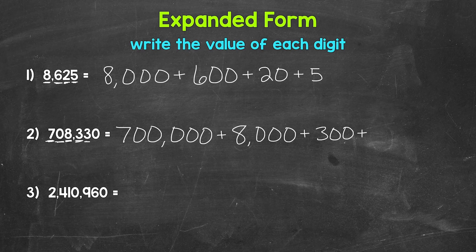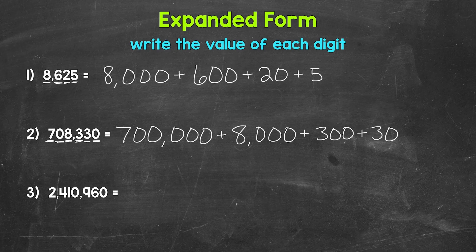Then we have another 3 in the tens place, so the value of this 3 is 30. And then we have a 0 in the ones place, so we don't have a value to show here — we don't have a value to write for the ones place. So we are done. That's the expanded form of 708,330.